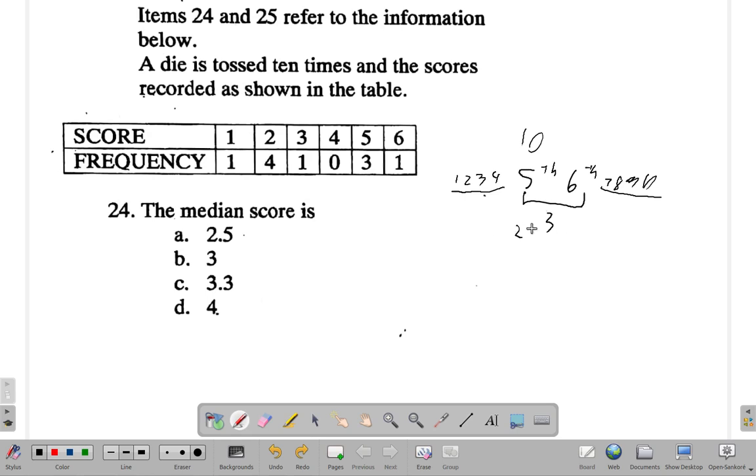So you have two of them falling in the middle. You're going to have to say two plus three over two, which is five divided by two, 2.5. So our answer here is 2.5, A. So the answer for 24 is A.